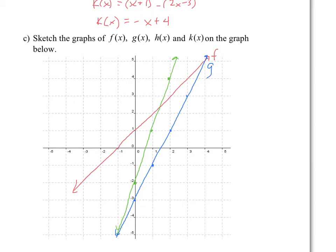Notice that you have negative 1 for the y value here and 2, so the sum of those two gives you 1. The sum of the y values here is 3 plus 1, which gives us 4. The sum of the y values here is 1 minus 3, which is minus 2. When y equals 0 and y equals negative 5, the function h has a value of negative 5.